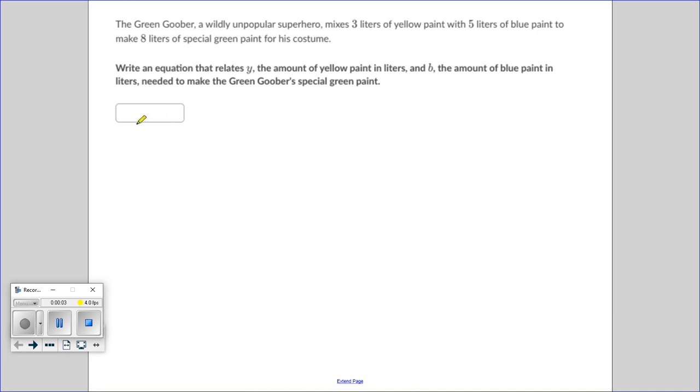Okay, here's a problem I was asked to do. The Green Goober, a wildly unpopular superhero, mixes three liters of yellow paint with five liters of blue paint to make eight liters of special green paint.